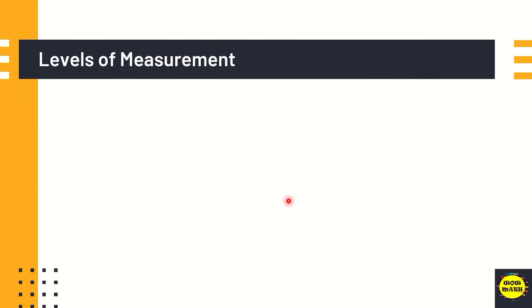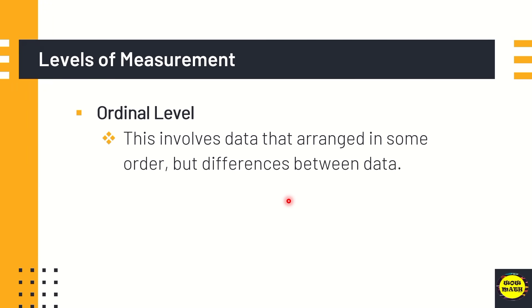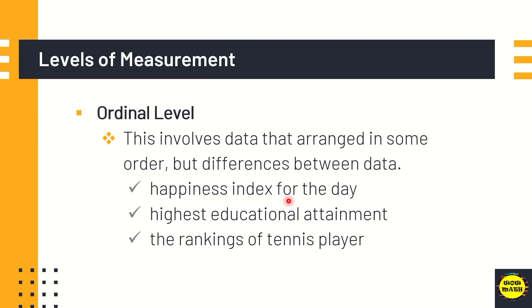Another is the ordinal level. When we say ordinal level, this involves data that are arranged in some order but differences between data. For example, the happiness index for the day in rate of 1 to 10. So what is your happiness index for a particular day? Highest educational attainment. Another is the ranking of 10th player. So we have first place, second place, and third place. And also the academic excellence awards. So we have with highest honors, with high honors, and with honors.